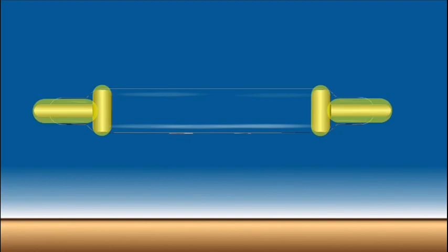Cathode and anode are placed at both ends of the cathode ray tube. Left side is cathode and right side is anode.